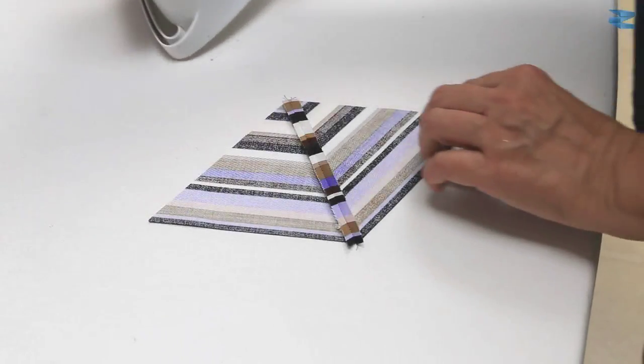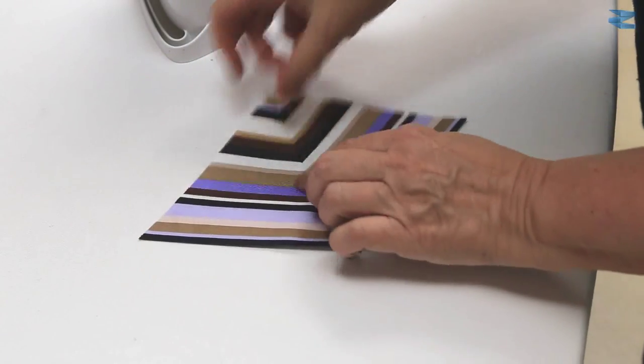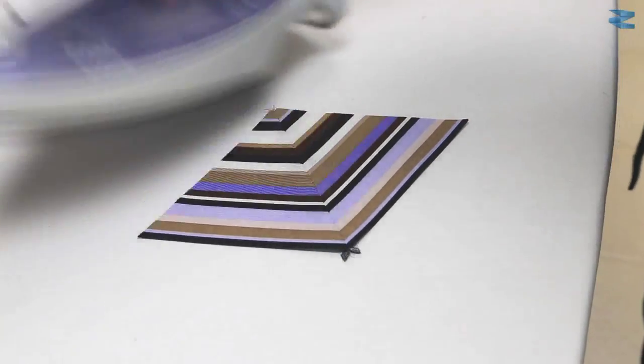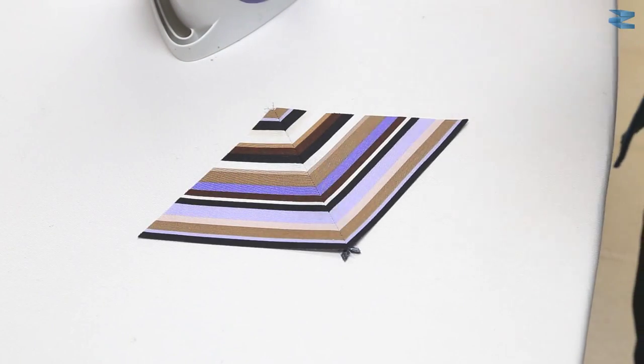Hold it there, flip it over and press again. There you have two of the triangles together.